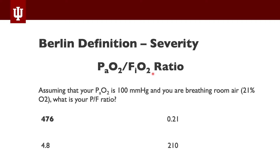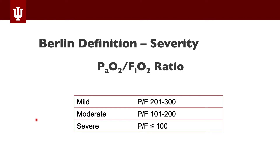A normal P-to-F ratio is somewhere in the neighborhood of 450 to 500. Here are the ARDS severity definitions: mild ARDS is a P-to-F ratio of 201 to 300; moderate is 101 to 200; and severe is less than 100. As the number gets lower the severity goes up, with categories of 200–300, 100–200, and less than 100. This is how we describe the severity of ARDS.